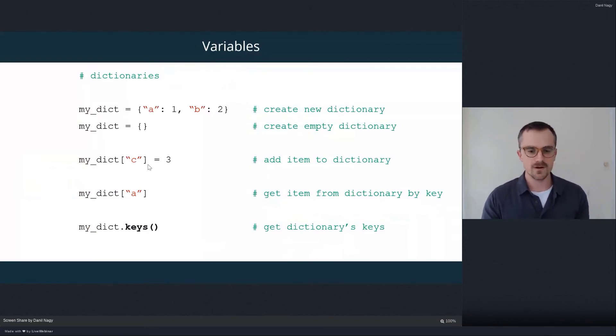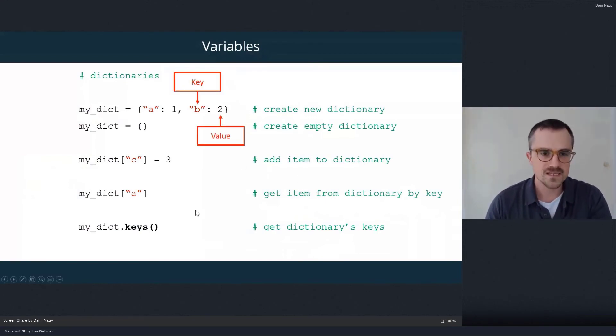So the second kind of multi-item variable is called a dictionary. And dictionaries are also a way to store multiple pieces of data in a single variable. But the way that you store the data and the way you retrieve it are a little bit different.